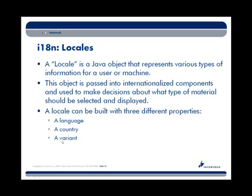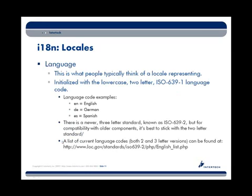When you build a locale, you have three different properties: a language, a country, and a variant. Language is the most obvious — a lot of people only think about this when supporting another region. The locale can be configured just to represent a language, which is the minimum needed. Language is represented using a two-letter ISO 639-1 standard code — for example, EN for English, DE for German, ES for Spanish. There is a newer three-letter ISO 639-2 standard, but for backwards compatibility it's best to stick with the two-letter standard.